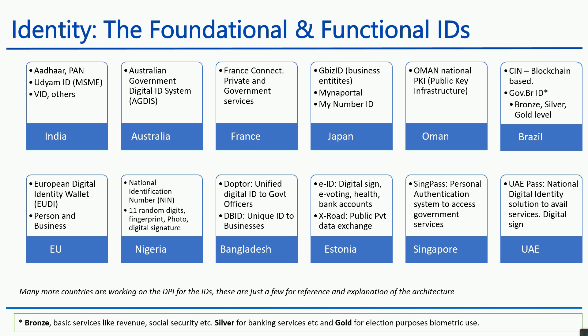These different countries are using identity layers for businesses and individuals, which is now helping them transform the way they offer services. They cross-leverage each other's speciality and databases to create public goods and services for citizens, and also run data-based governance. This makes it easier for citizens to have better access to all services and instant service delivery. This is the layer of foundational and functional IDs that these countries have created.